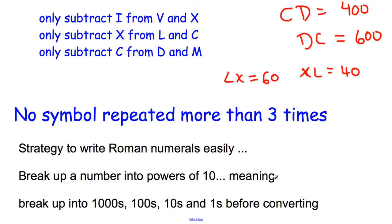No symbol is going to be repeated more than three times. The maximum number of times that you repeat a symbol is only three. When it comes to taking a number in the Hindu-Arabic modern form and trying to write it into Roman numerals, I have a strategy that I'll look at powers of 10. I'll look at all the 1000s first, then the 100s, then the 10s place and then the 1s place. If you do those separately, it makes it a lot easier to write.